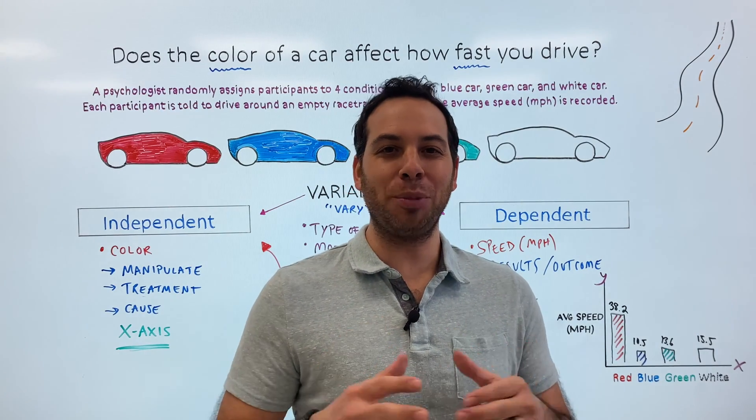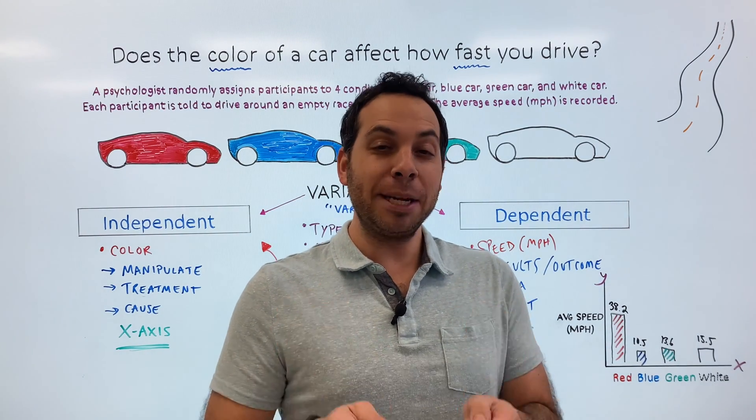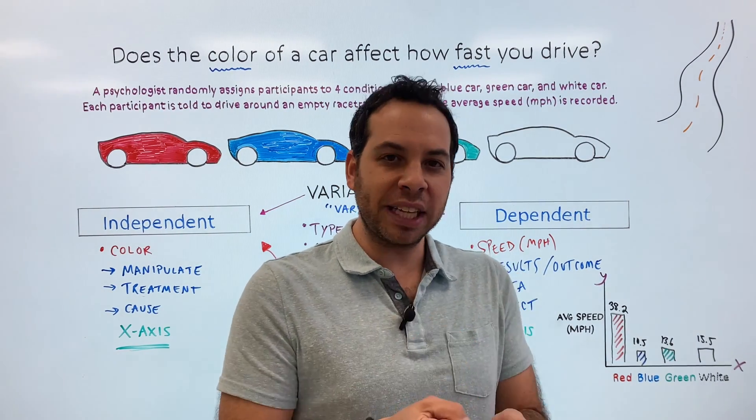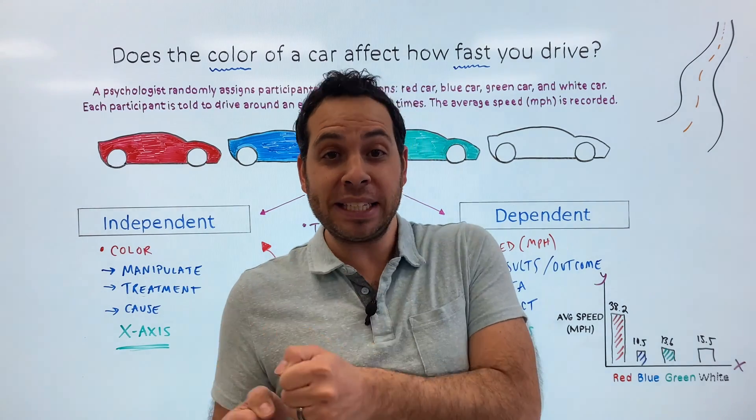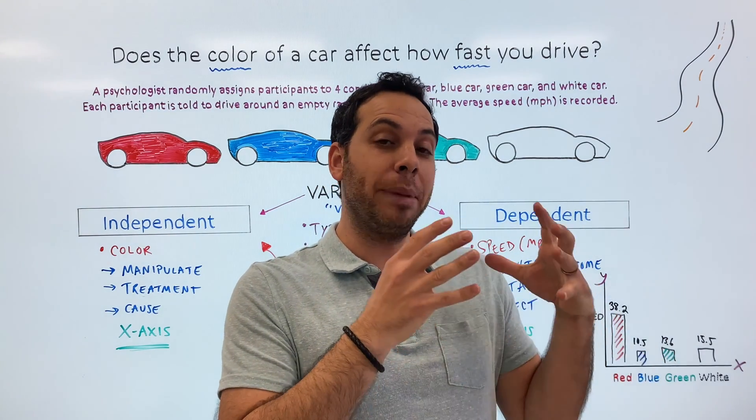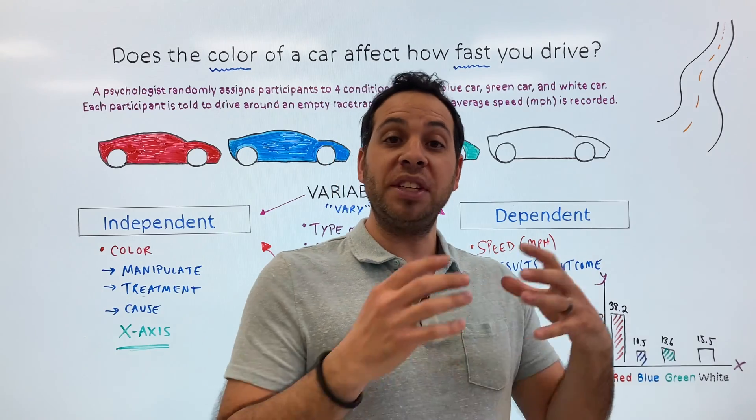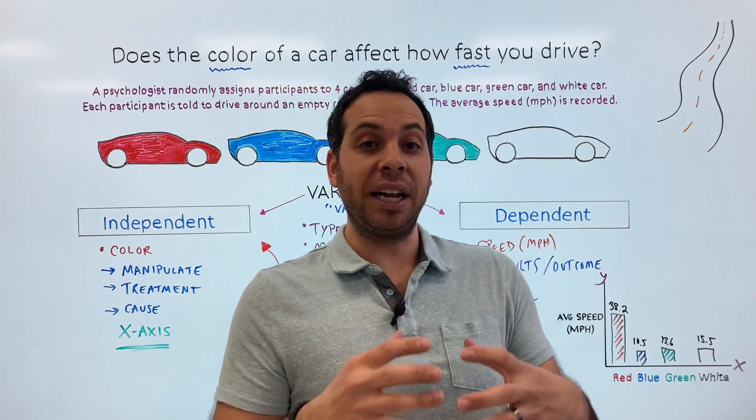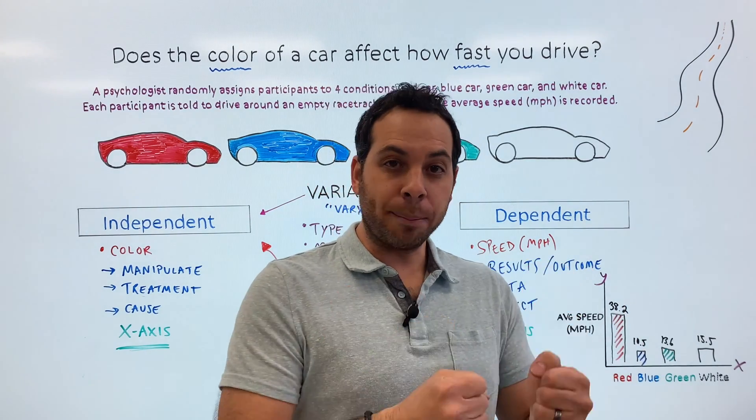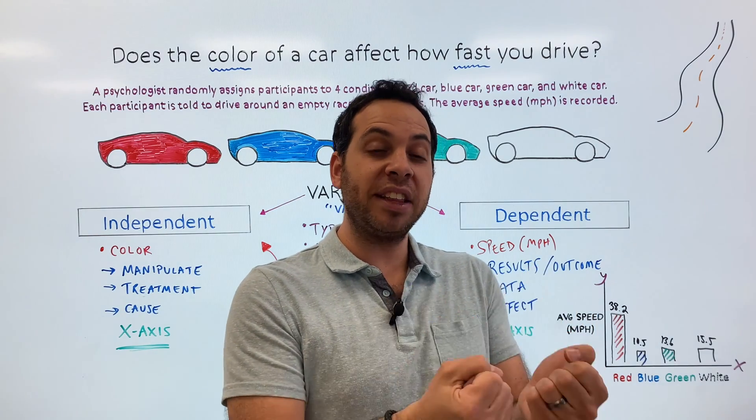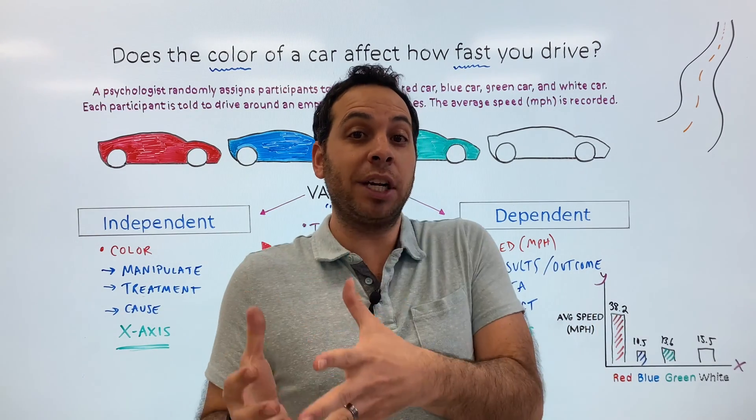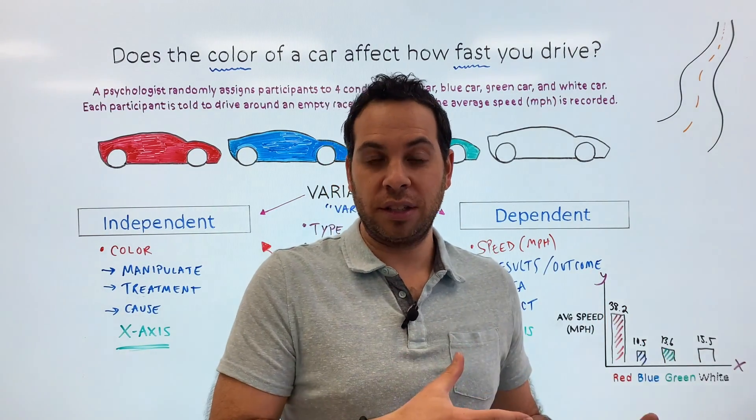Alright, guys. Thanks for watching. I hope you learned something. Remember, the independent variable is a variable that you isolate and separate and keep independent from the other variables that you remain constant and unchanged. While the dependent variable depends on the independent variable. It's the numbers. It's the measurement. It's the data that you collect to see if the independent variable had any effect at all. Thanks for watching.